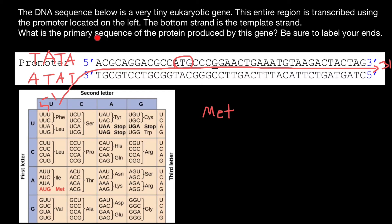According to our problem, we not only have to give the protein sequence, but we also have to label our ends. Every amino acid has two ends: an amino end and a carboxylic acid end. When they form a chain through peptide bonds, every polypeptide chain also has an amino end and a carboxylic acid end. So the first amino acid is going to have the N-terminus. The second codon is CCC, which means proline. So the second amino acid is going to be proline.